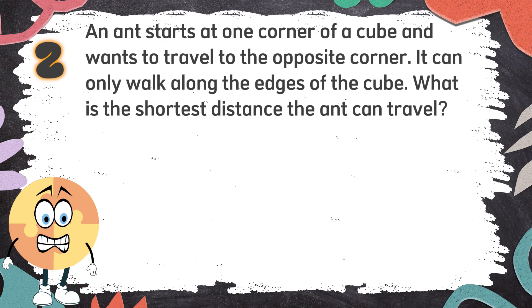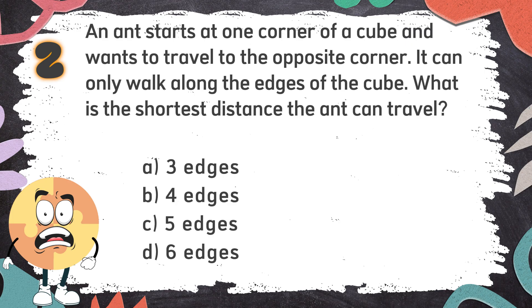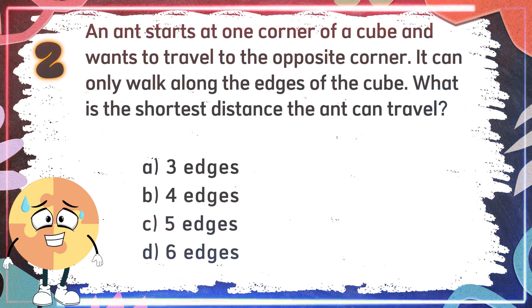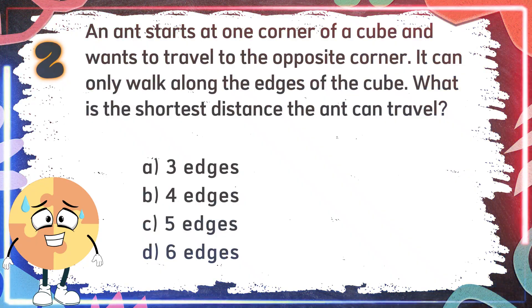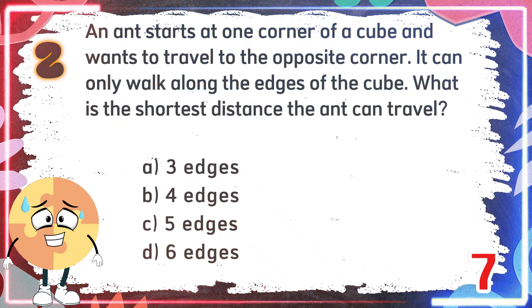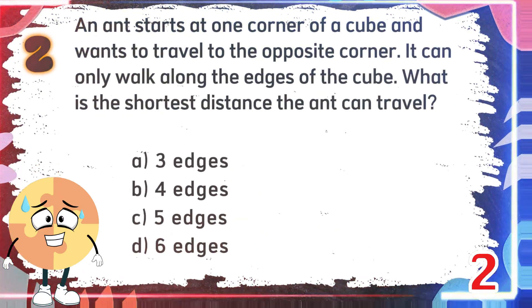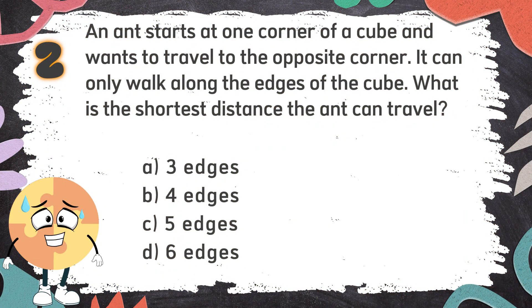Number 2. An ant starts at one corner of a cube and wants to travel to the opposite corner. It can only walk along the edges of the cube. What is the shortest distance the ant can travel? The choices are: A. Three edges, B. Four edges, C. Five edges, D. Six edges. The correct answer is A. Three edges.